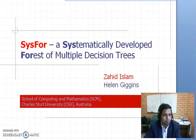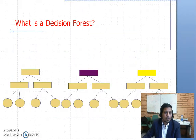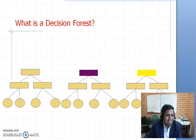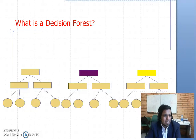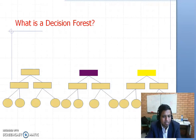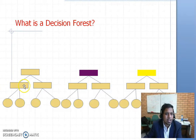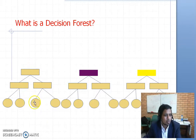The very first question is: what is a decision forest? A decision forest is actually an ensemble of a number of decision trees — a set of decision trees. Here in this slide you can see there are three decision trees: one on the left side, one in the middle, and one on the right.